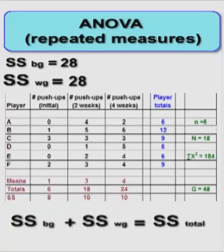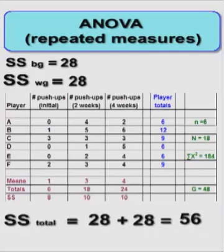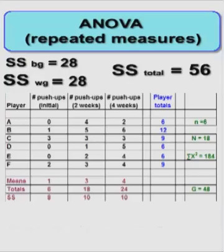So if we know the two sum of squares, we should know the sum of squares total just by adding them up. So now we have all our sum of squares from the original ANOVA. Let's keep going.